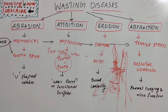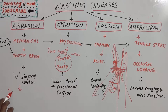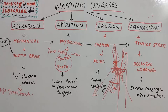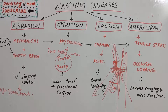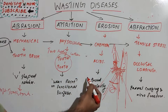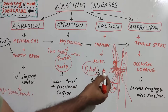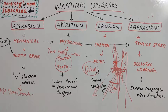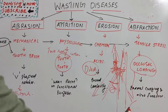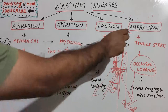For management: in abrasion, the main cause is the toothbrush, so a soft toothbrush is recommended. Composite or GIC filling can also be considered, as well as fluoride varnish. In erosion, changing the diet is the primary approach; for endogenous cases like GERD, the underlying condition must be managed. In abfraction, occlusal adjustment is required.